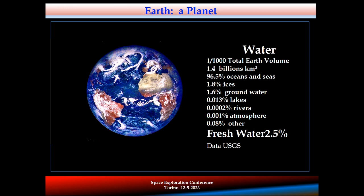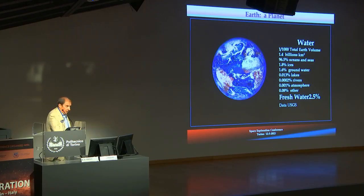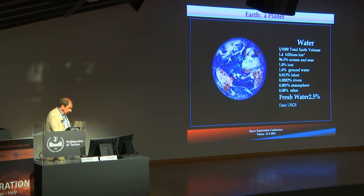And even if it's a lot of billions of cubic kilometers, 96.5% is oceans and seas — meaning salty water. 1.8% is trapped in ice, either at the North and South Pole and many other regions, including glaciers on the mountains. Only 1.6% is groundwater, and of this water, only 0.013% are lakes, and much less are rivers.